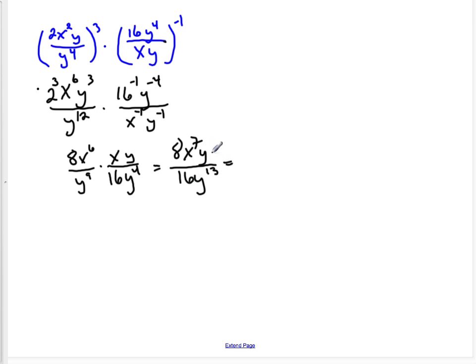Finally, I still have some y's up top and down below, which will simplify, and 8 and 16. Well, 8 and 16 reduce to 1 over 2, 1 half. x to the 7th just stays x to the 7th. 1y will cancel with 1 of the y's down here, so I'll have 12 y's left down below. So this is my answer.